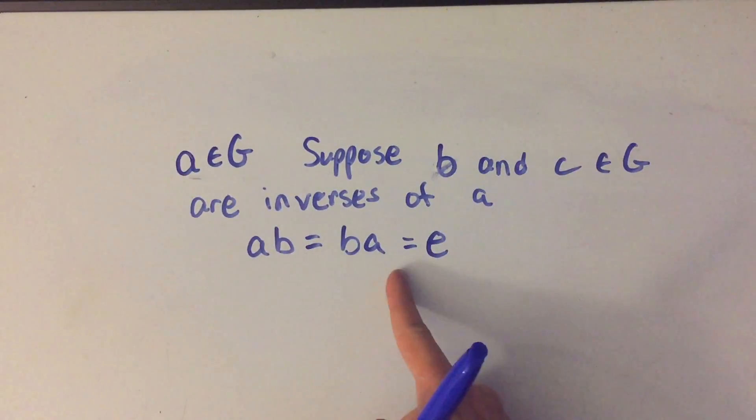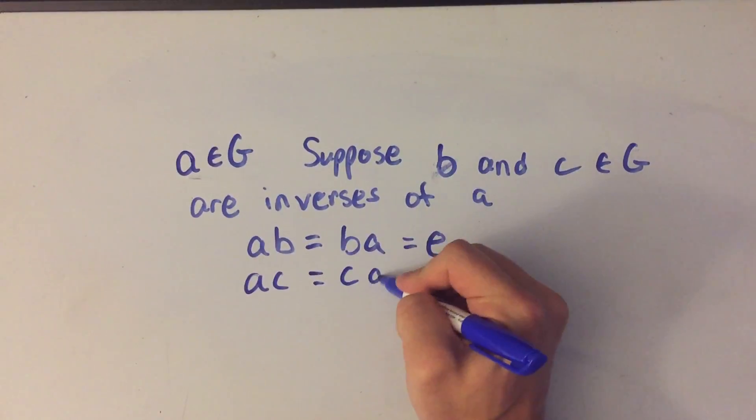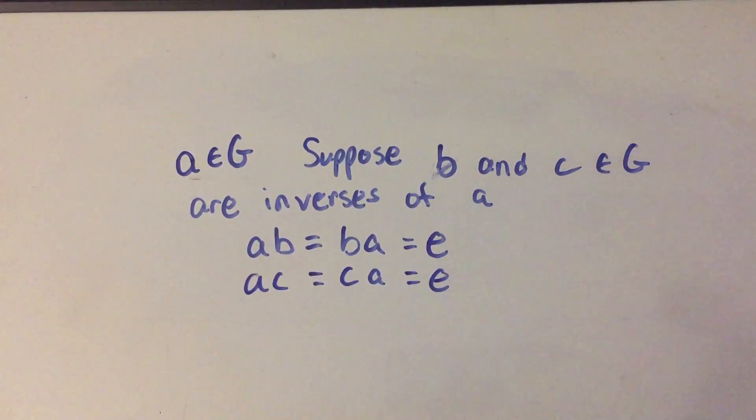So that's for B. If C is also an inverse, then I've got A times C is equal to C times A, which is also the identity element.